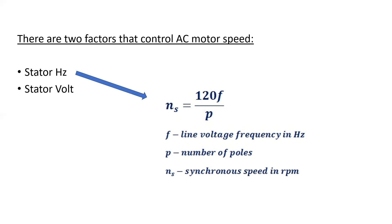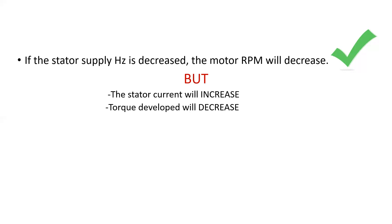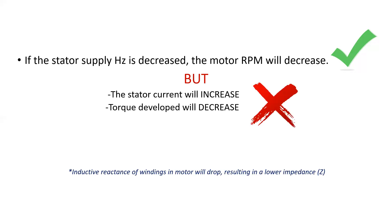The stator voltage will also lower the motor speed if it is driving a load. But there's a problem. If the stator supply hertz is decreased, the motor RPM will decrease. However, the stator current will increase and the torque developed will decrease. The reason for this is that the inductive reactance of the windings in the motor will drop because of the supply frequency going down. This will result in a lower overall impedance, and due to Ohm's law, more current will be drawn.